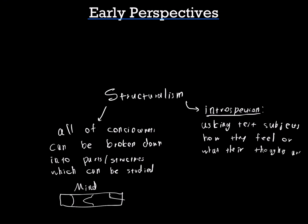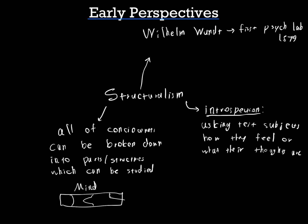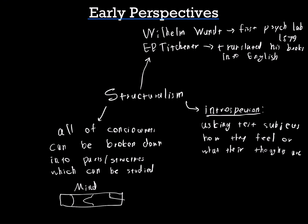The person who founded structuralism was Wilhelm Wundt, who was German. He built the first psychology lab in 1879 at the University of Leipzig. Another person involved in this was E.B. Titchener, who was a follower of Wundt and translated his books into English.